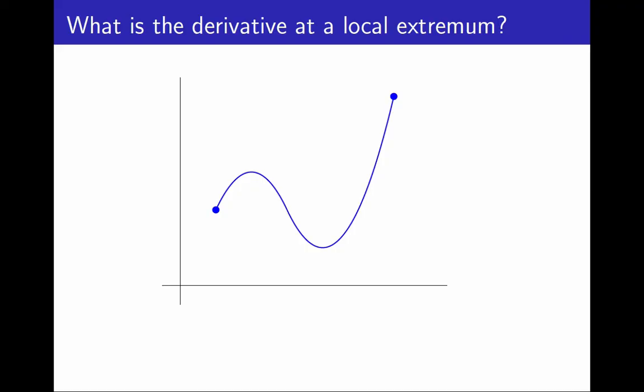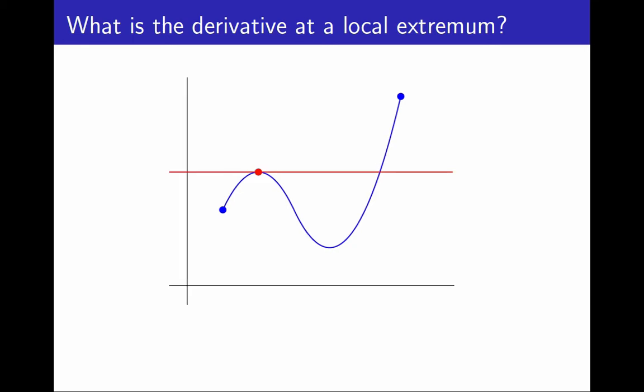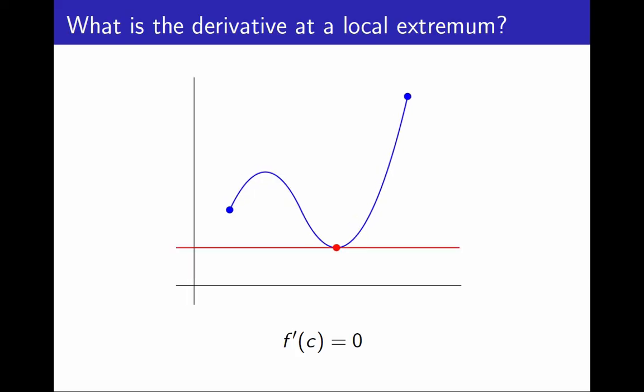The function in this graph has a local maximum. The tangent line at the local maximum is horizontal, and the derivative is zero. It also has a local minimum, and the derivative of the local minimum is also zero. It looks like this will happen at local extrema always.